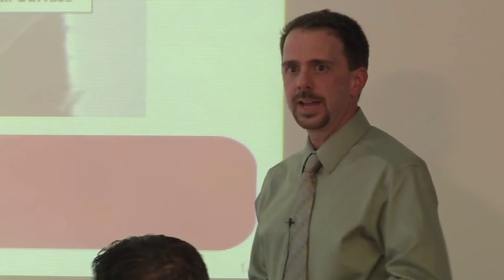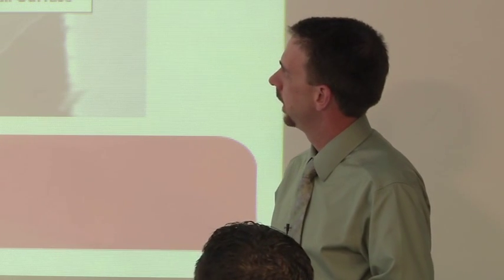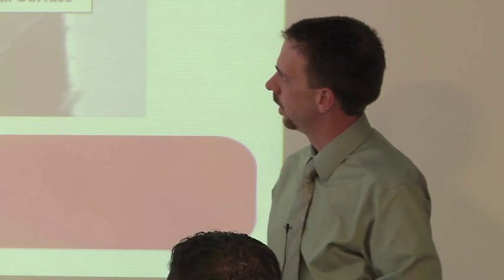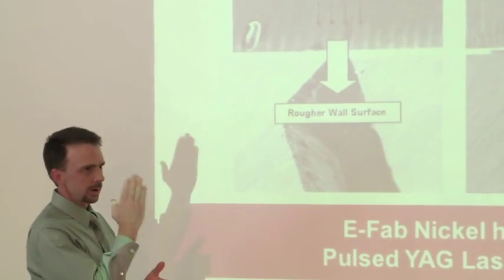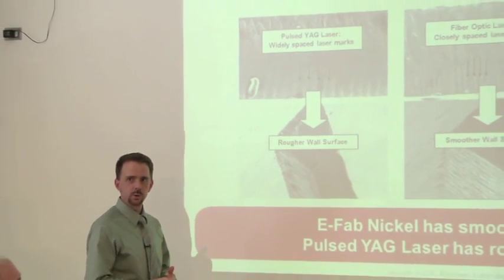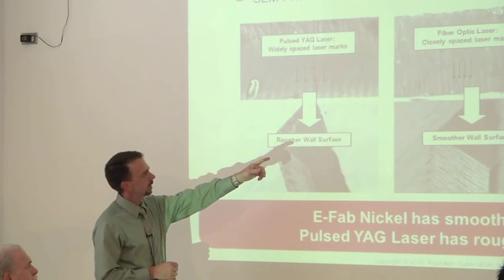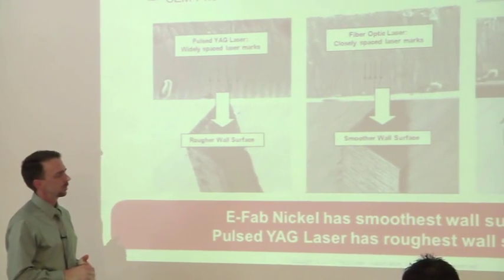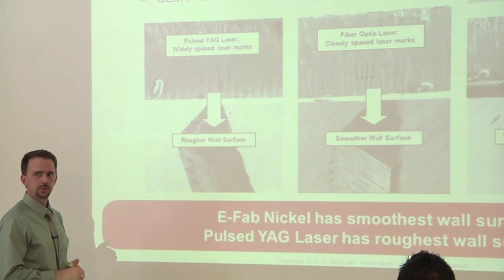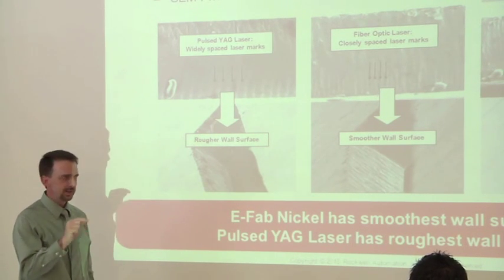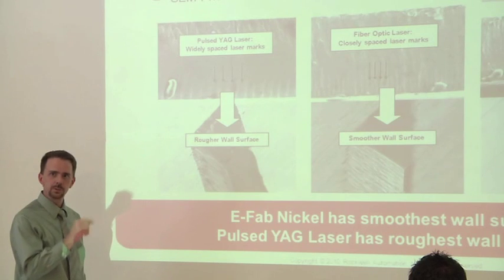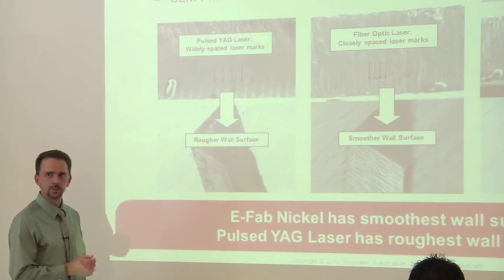Now we'll get into the aperture cutting methods. We looked at the pulse YAG laser — you can see pictures of that on the far left. This is what I was talking about with that scalloping feature. You can kind of see those different lines in the cut edge of the stencil that demark the pulsing of the laser as it goes through the material. If you look at the same thing on the fiber optic laser, those spaces are much closer together — indicative of the smaller spot size and higher frequency pulsing, which moves those scallops closer together with less height, giving you a smoother wall surface.